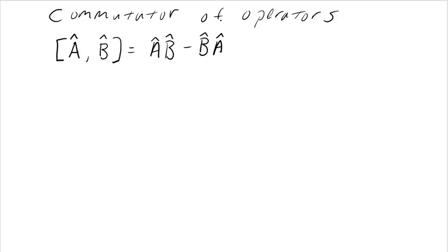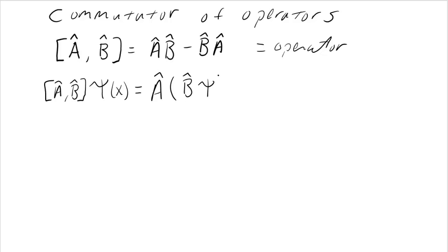Because an operator operates. An operator by itself has no value. It's only when it does something to a function. So a commutator itself is actually an operator. This combination of operator A operator B minus operator B operator A is an operator. And this makes more sense with a function to operate on. So let's do that. The commutator of A and B acting on some function psi. What that means is operator A operating on B operating on psi. So operator B operates on psi, and then operator A operates. Minus operator B acting on operator A which already acted on psi.